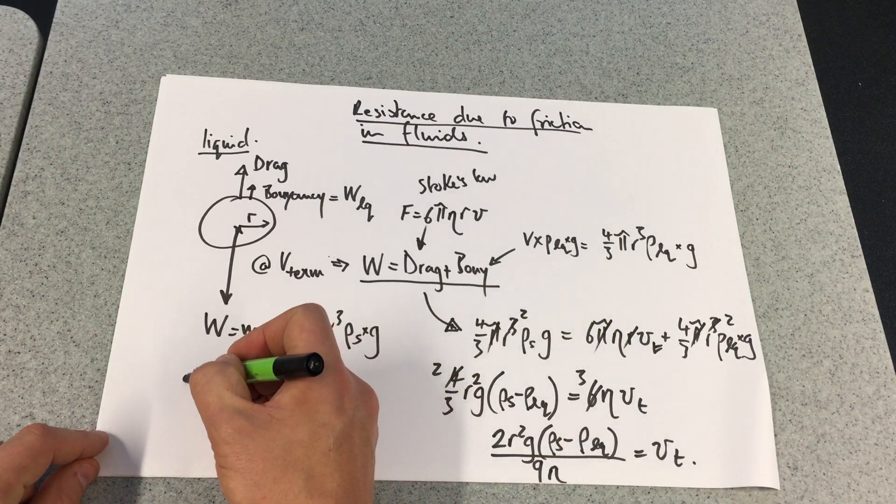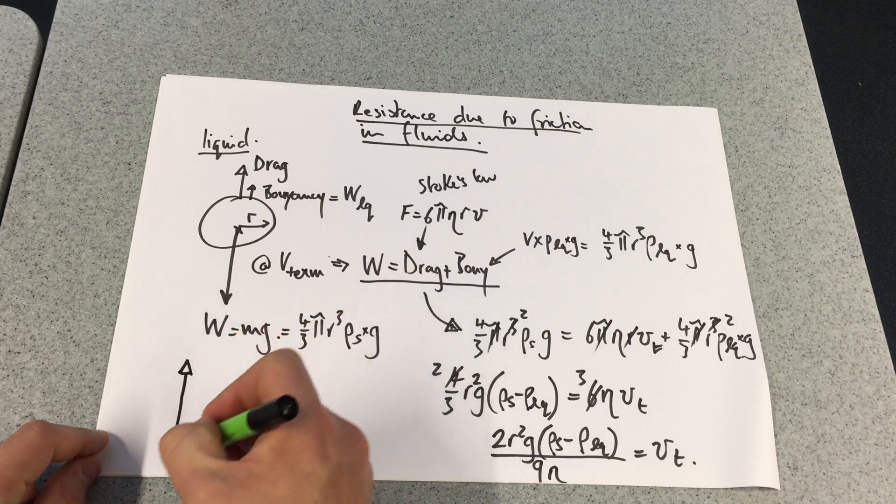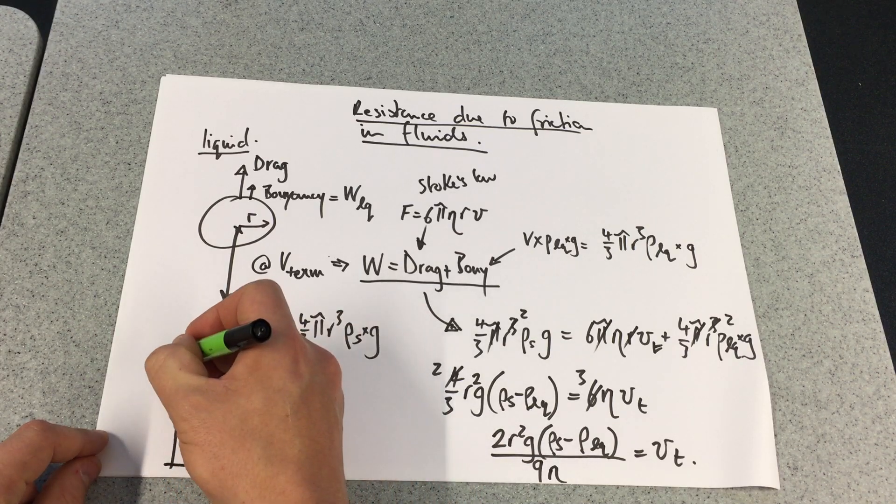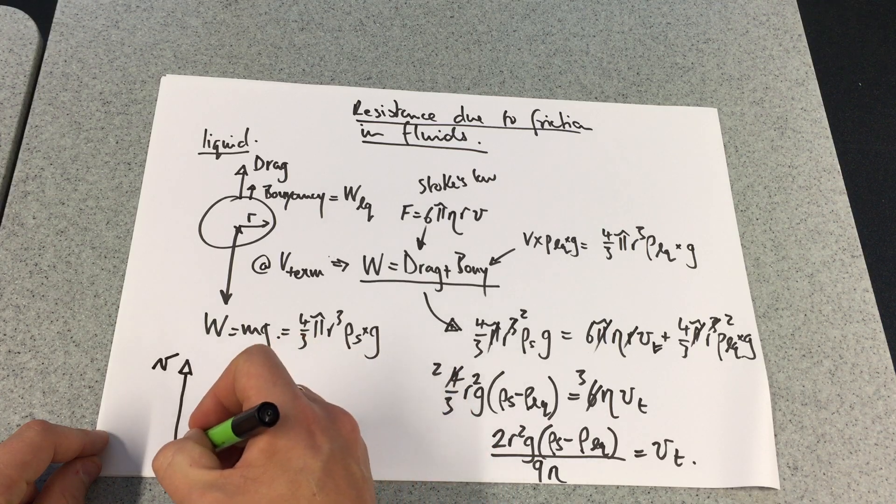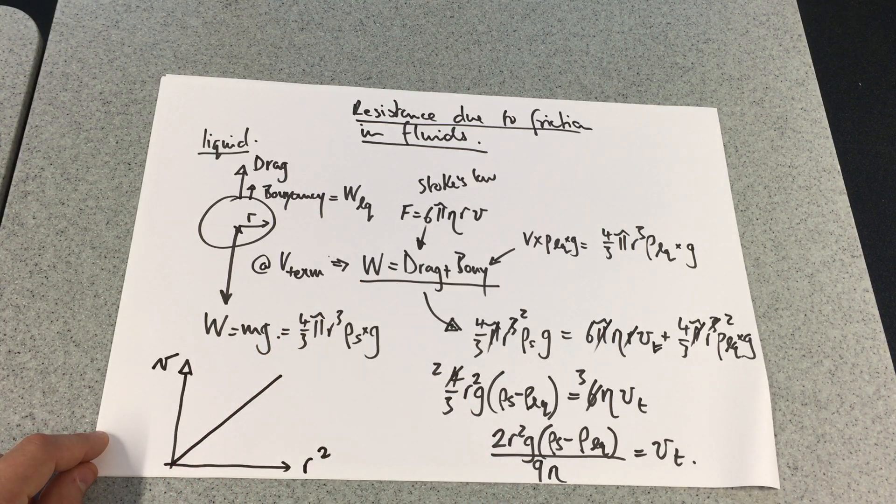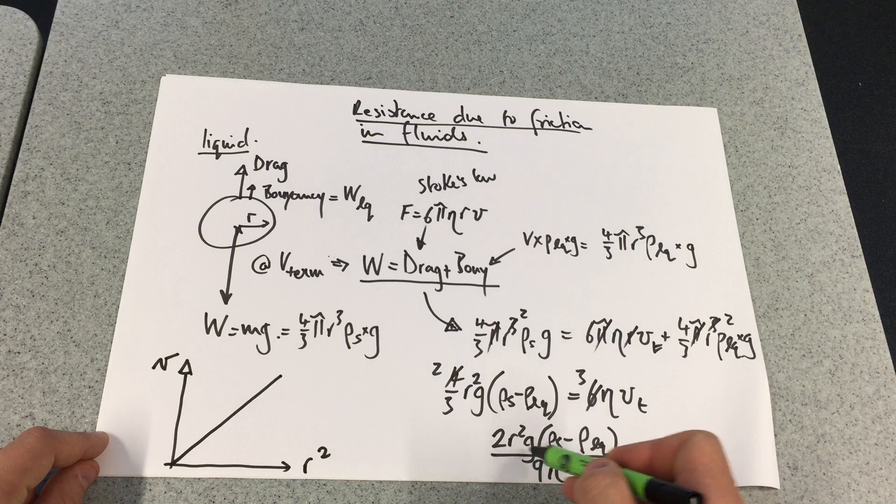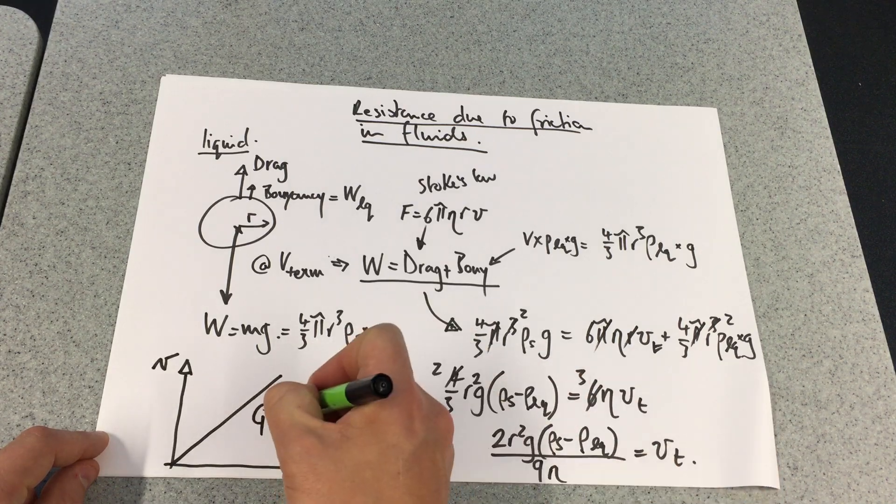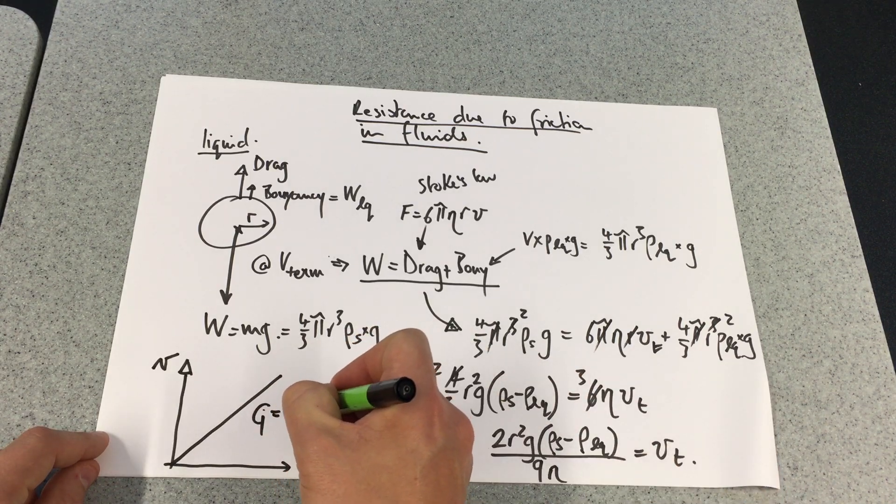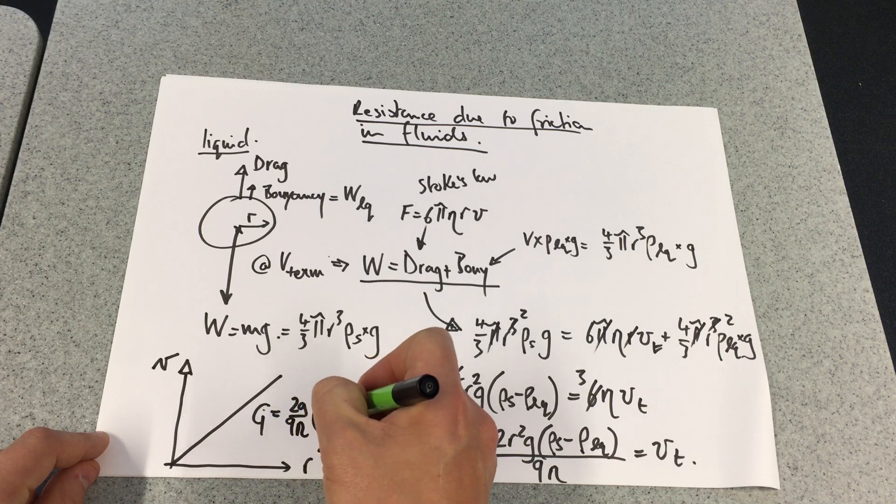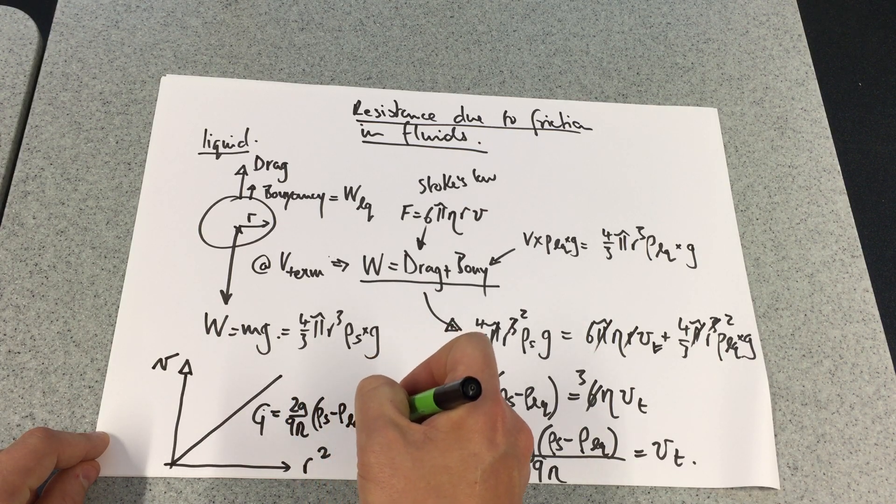What I'm looking to see is whether my velocity and my r² are directly proportional. And if they are, then my gradient equals something complicated, but 2g/9ν, density of steel, density of liquid.